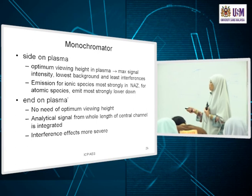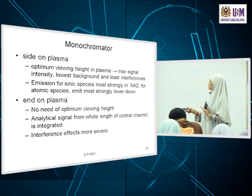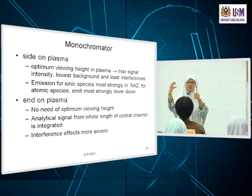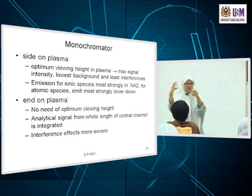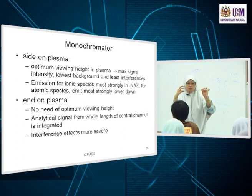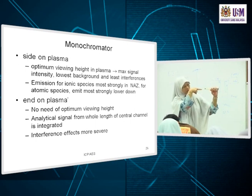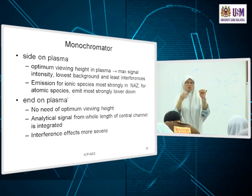Finally, there are two ICP configurations commercially available: side-on (radial) and end-on (axial). In the radial configuration, the monochromator views the plasma from the side. In the axial configuration, you look along the axis of the plasma — end-on — through the torch. Both are available, and there are advantages to choosing axial over radial, which was the original configuration.